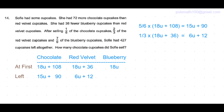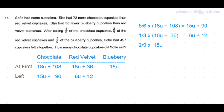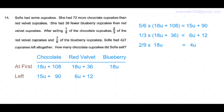Seven ninths of the blueberry cupcakes were sold, which means two ninths were left. Two ninths of 18 units is 4 units. So 4 units of blueberry cupcakes were left.